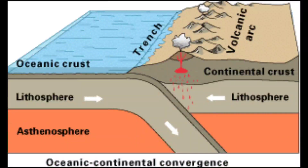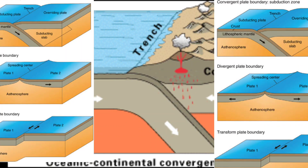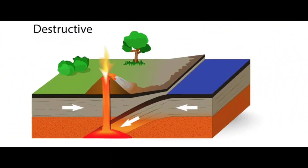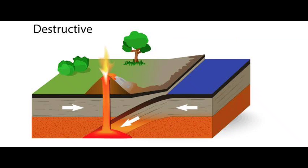These movements created plate margins. The first is the constructive plate margin, where two consecutive tectonic plates move away from each other, forming a gap between them. This gap allows magma to come out and settle, which forms volcanoes. Volcanic eruptions are due to constructive plate margins.